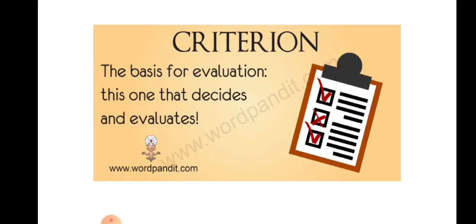The next word is 'criterion.' Criterion actually means a standard or principle by which something is judged — it's a yardstick. You can associate criterion with 'krithi' — krithi is a task. You are referring to a task or principle by which something is judged. Criterion is the basis for evaluation.